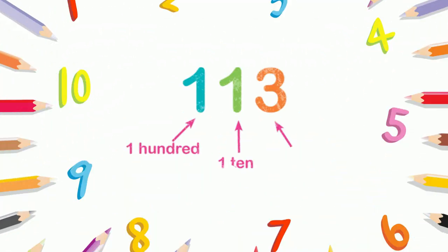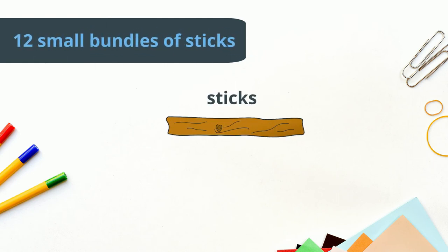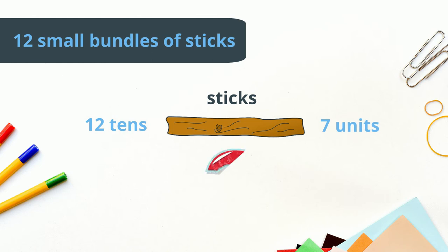Now that you have learnt about units, tens, and hundreds separately, let's see how we identify them in a number. Suppose twelve small bundles of sticks — which are twelve tens — and seven separate sticks — which is seven units — are placed on the floor. How many sticks are on the floor in total?